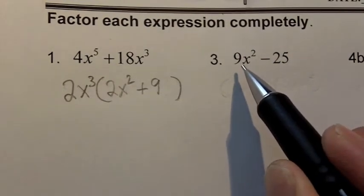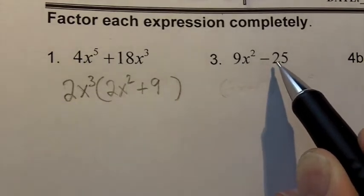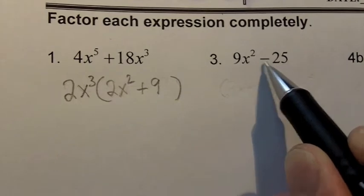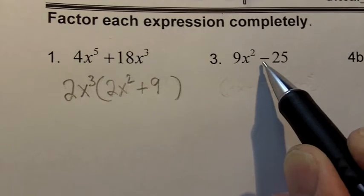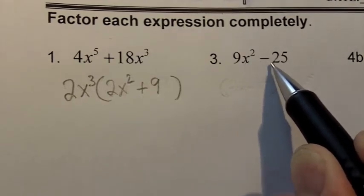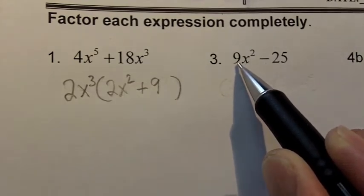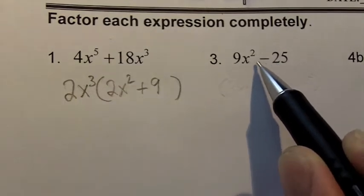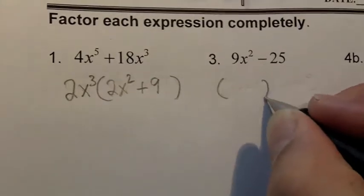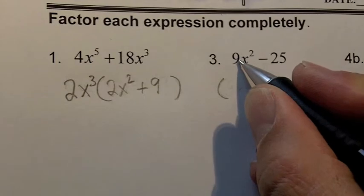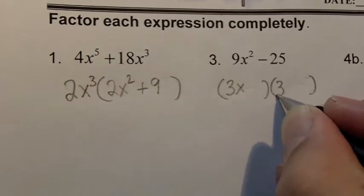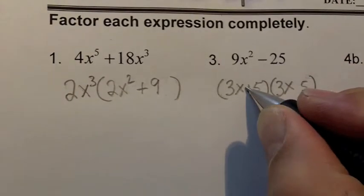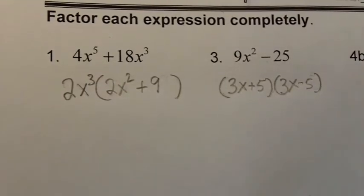Now let's take a look at question 3. Starting with the greatest common factor: 9 and 25 share no common factors, and there's no x in both terms, so there's no GCF. With two terms, the only option is difference of squares, and I do have a minus sign. 9x² is a perfect square — 3x times 3x — and 25 is a perfect square — 5 times 5. So this factors into two binomials: (3x + 5)(3x − 5).